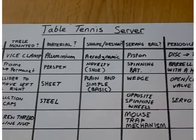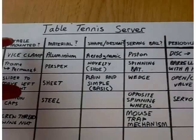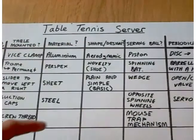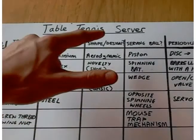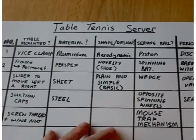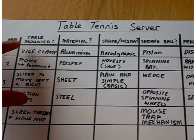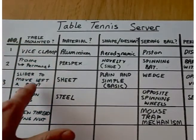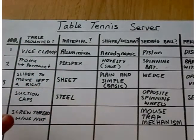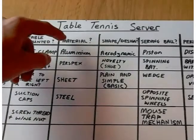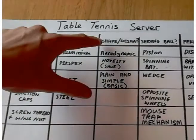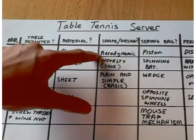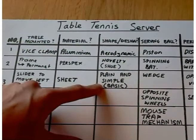As you can see, I have come up with various solutions under each of the attributes listed above. Simply write them out as much as you can. For example, under Table Mounted, I have wrote a slider to move left and right. Under Material, I have listed Aluminium, Perspex, Sheet and Steel. Shape Design: Aerodynamic, Novelty, and a Plain Basic Design.